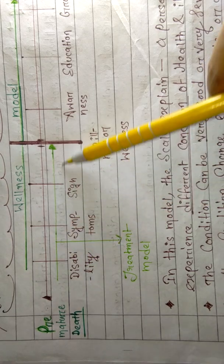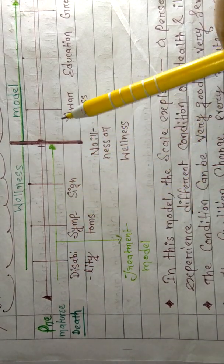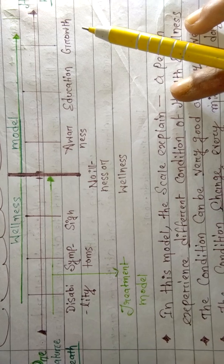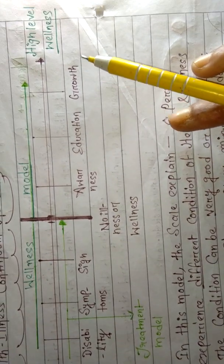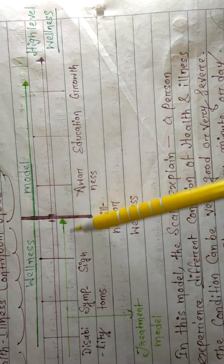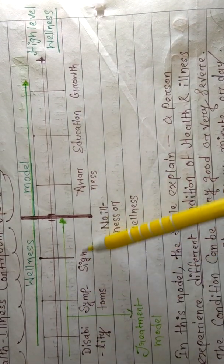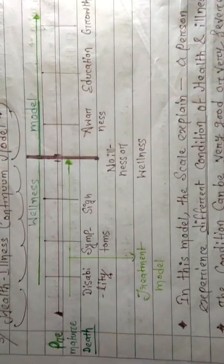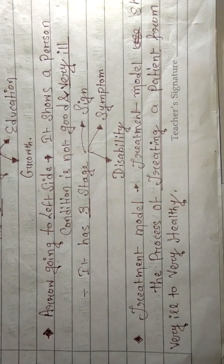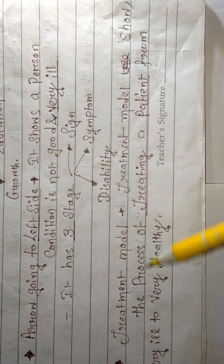Now let's study the treatment model. This green arrow goes towards the right side, meaning towards a high level of wellness. This green arrow shows the treatment of the patient.